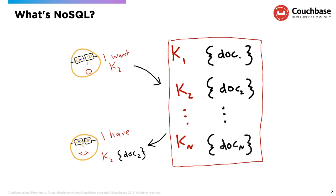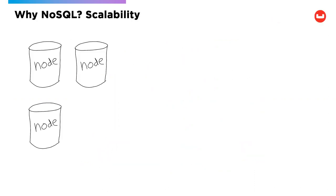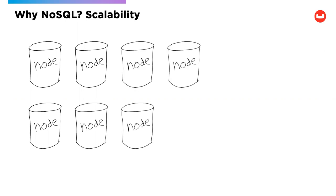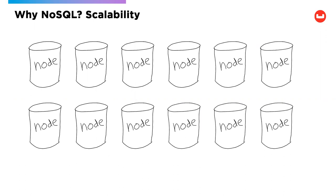One of the reasons NoSQL has taken off is scalability — the ability to increase the resources of your database to deal with more web traffic, more operations, more reads and writes, and larger amounts of data. One thing NoSQL does well is called horizontal scaling, where instead of just having a bigger machine with more processors, we add additional machines to what's called a cluster. As we need more capacity, we can add more nodes.